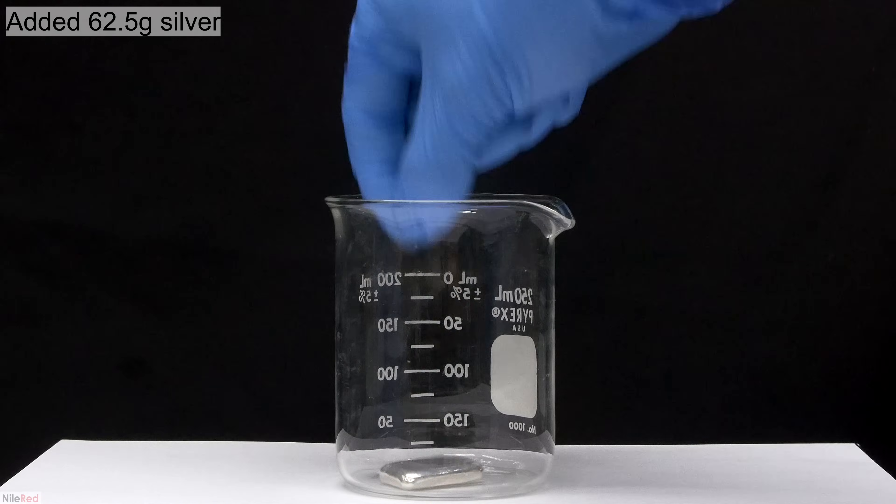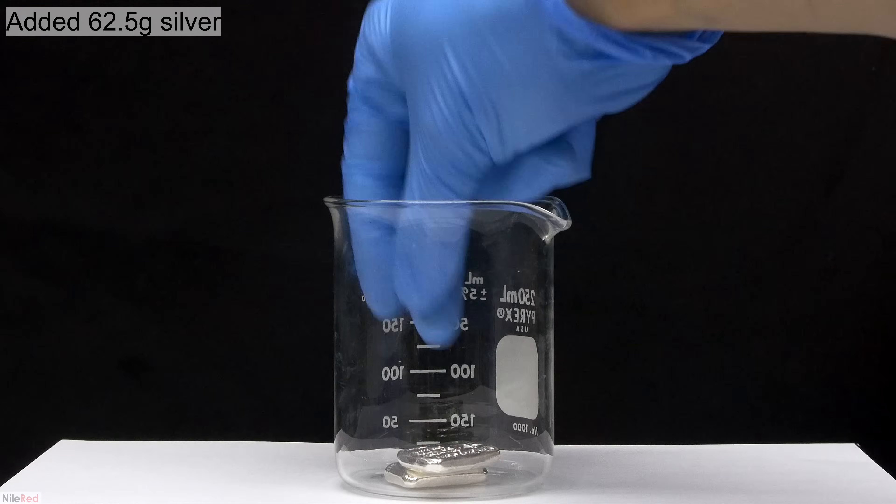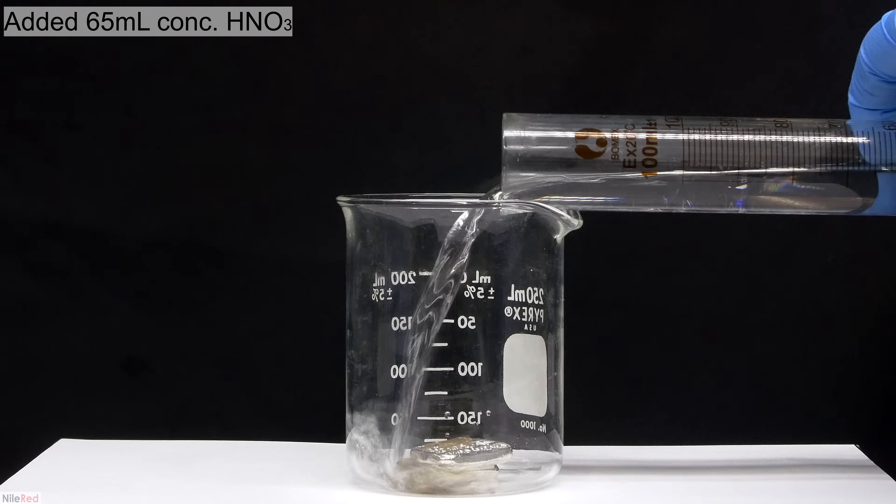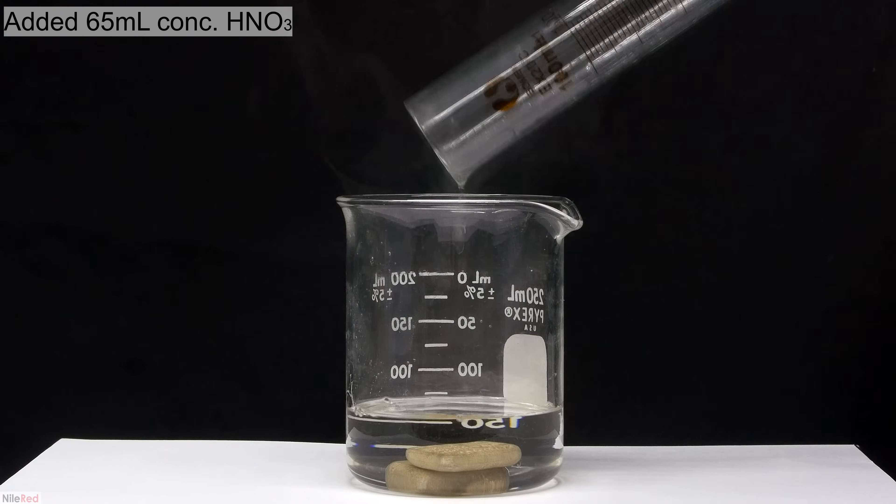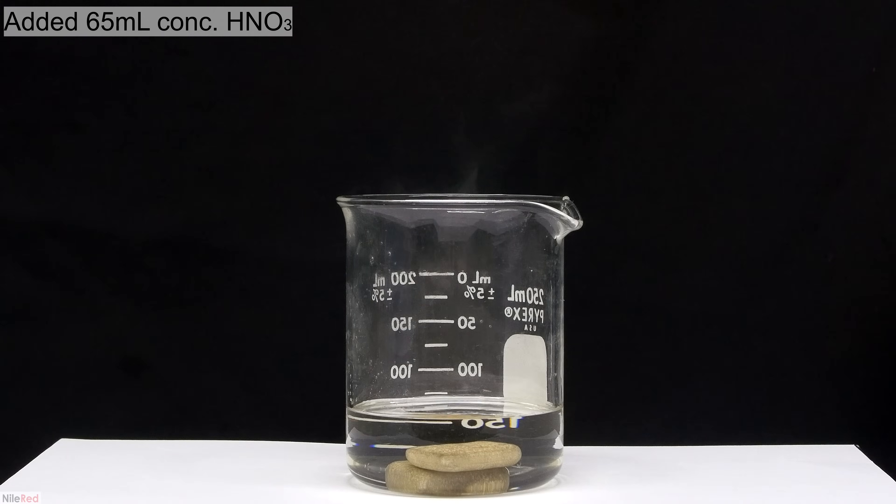To start things off, I put the two pieces of silver into a beaker. Onto the silver, I then added about 65 milliliters of concentrated nitric acid.